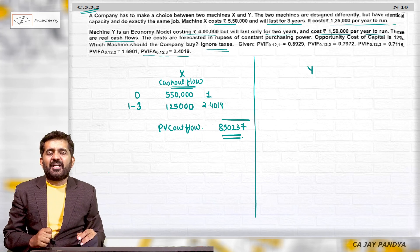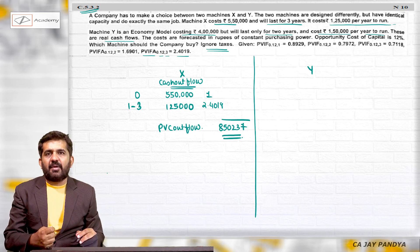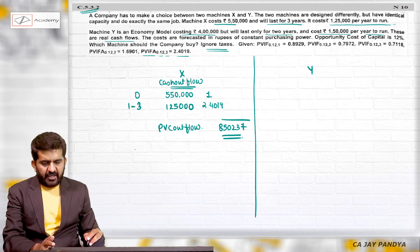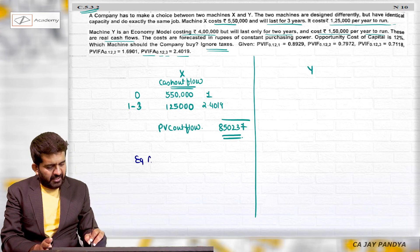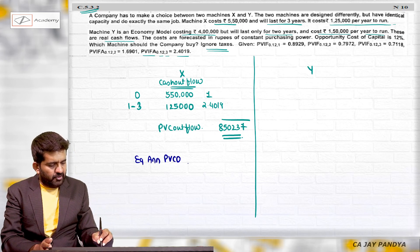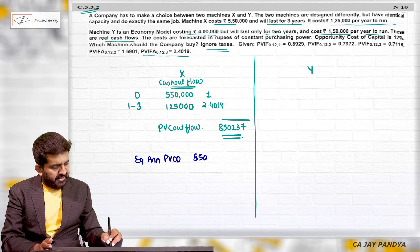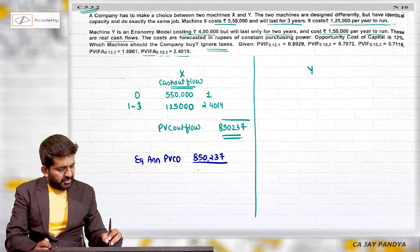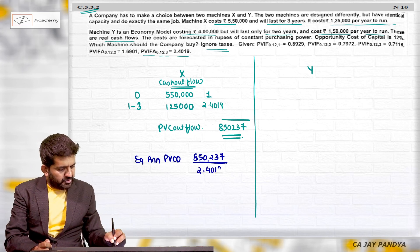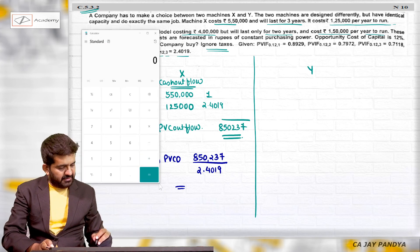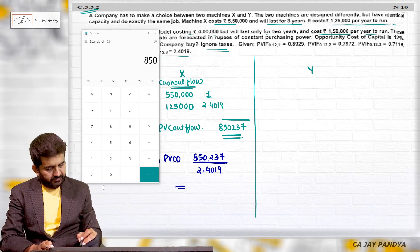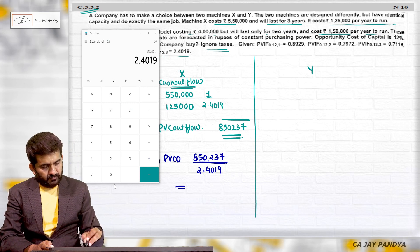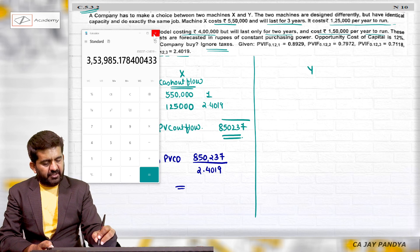But I need to find out the equalized annual present value of cash outflow because this project is for three years and the next project is for two years. So let me find out the equalized annual present value of cash outflow: 8 lakh 50,237. I can take the annuity factor for three years, which is 2.4019, and I will be getting the answer - 3 lakh 53,985.